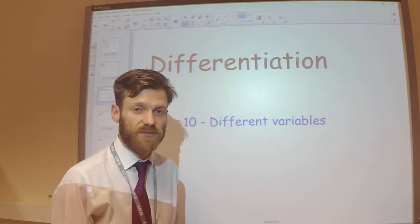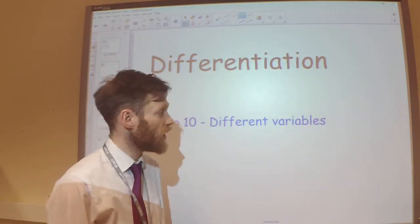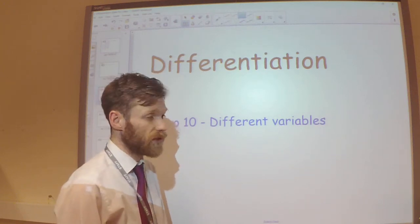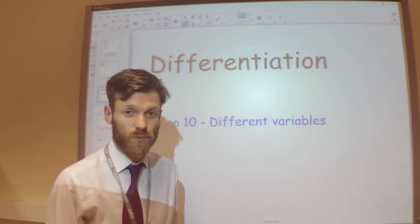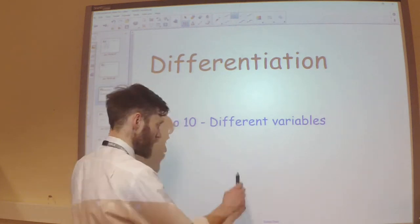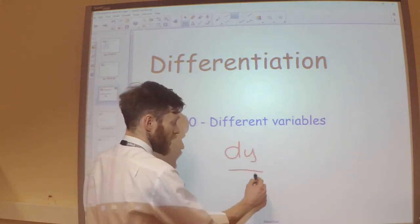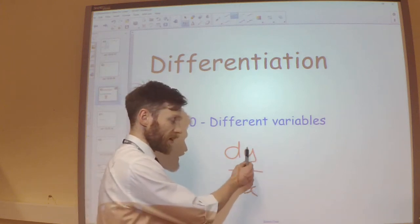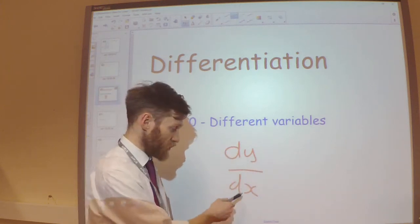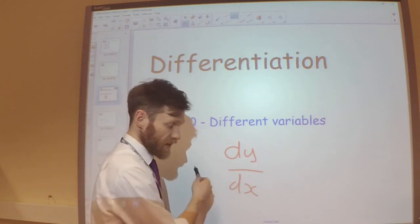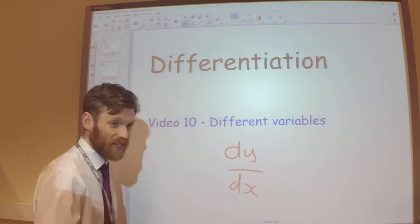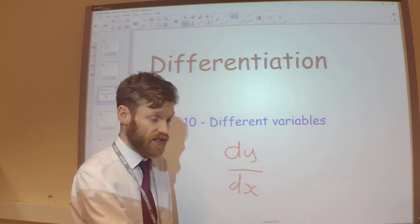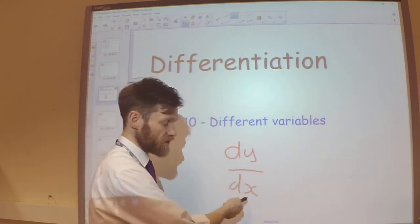This is the tenth video on differentiation, where we're going to extend the ideas we've seen previously to look at different variables other than x and y. When we are finding dy/dx, that's telling us how variable y is changing with respect to variable x. In terms of the curve, it's telling us the gradient — the rate of change of y with respect to x.